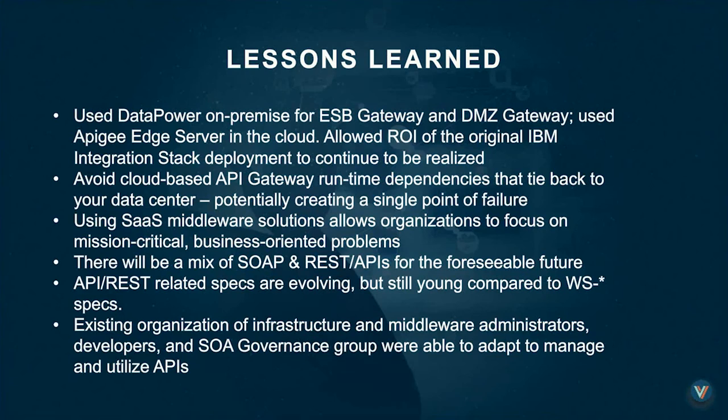Lesson two: when deploying complex middleware out in the cloud, avoid creating runtime dependencies that tie back to your data center — especially if there's only one data center. If the internet connection on your primary data center goes down, you've created an outage to your whole cloud platform, negating most of the benefits of running in the cloud. Architecting the identity provider stack, the IAM stack, logging, and all other runtime components to be cloud-based rather than dependent on a company-owned data center was challenging, and they didn't get it all exactly right the first time.